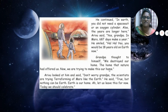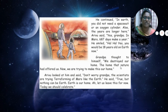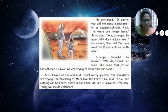'Now we are trying to make this our home.' Arumadhi looked at him and said, 'Don't worry, Grandpa — the scientists are trying terraforming of Mars.' He said, 'True, but nothing can be Earth. Earth is our home. Let us leave this for now. Today we should celebrate.' So from this lesson, what we are learning is — we should not pollute our planet Earth. We should save the planet Earth by planting more trees and we should not pollute the Earth.